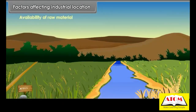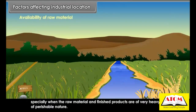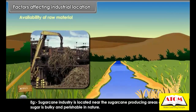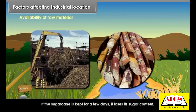Availability of raw material is the most important factor for industrial location, especially when the raw material and finished products are heavy or perishable in nature. For example, sugar cane industry is located near sugar cane producing areas, as sugar cane is bulky and perishable — if kept for a few days, it loses its sugar content.